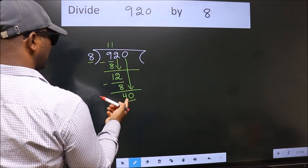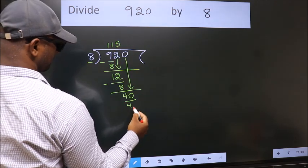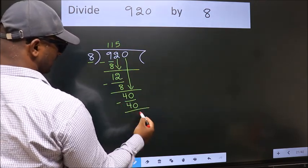When do we get 40? In 8 table. 8 fives, 40. Now we subtract. We get 0.